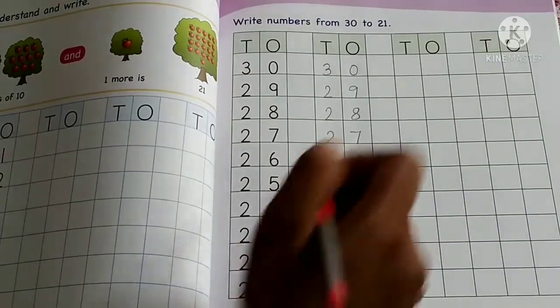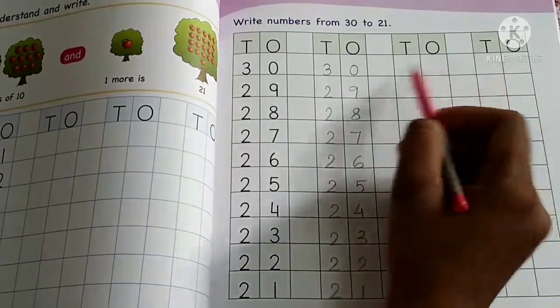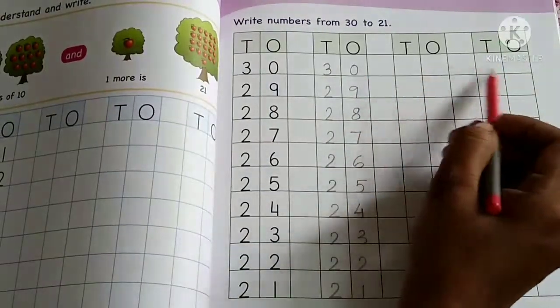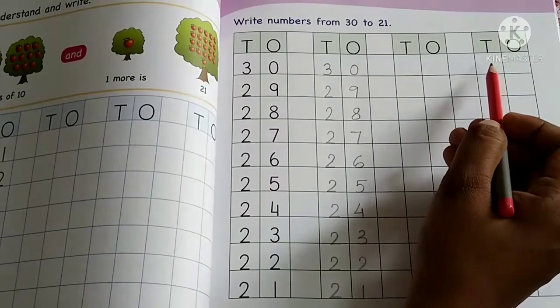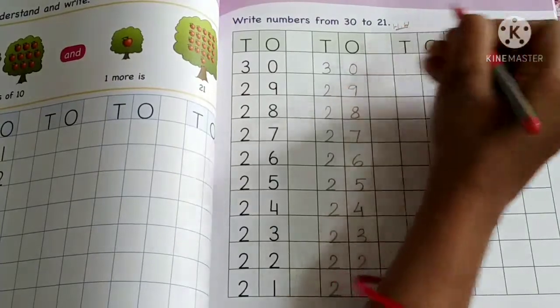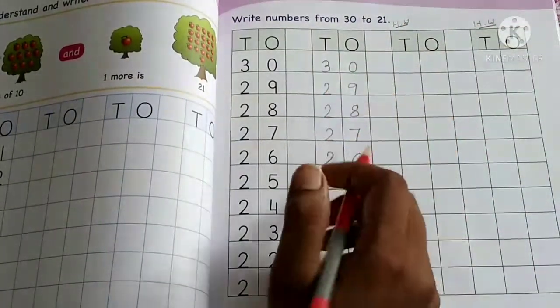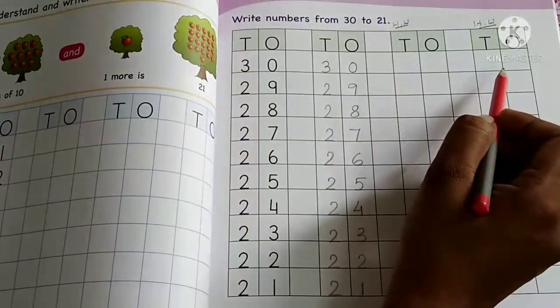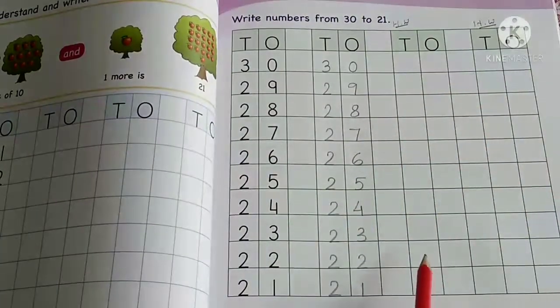And your homework is here. Here you will write down the same numbers in these two columns. So write here HW. This is your homework. Here we will write the same backward numbers from 30 to 21. And complete this work.